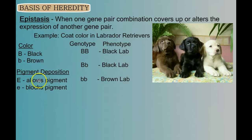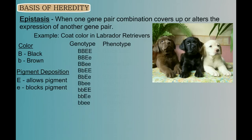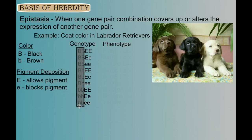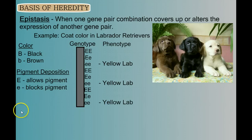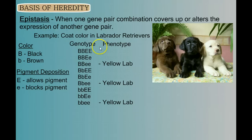The dominant big E allele allows the pigment into the coat, while the recessive little e allele blocks the pigment. When we consider both genes, we have nine possible genotypes. To see the phenotypic results, we can start by covering up the first two letters — it makes it easy to see where the yellow labs come from. Any time we get two little e's together, we block the pigment, and the result is a yellow lab, no matter what the first two letters are.